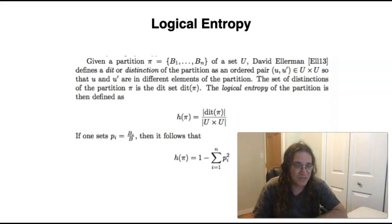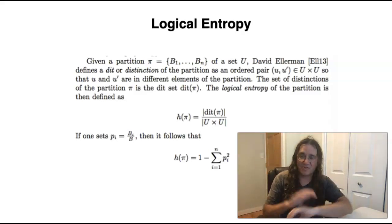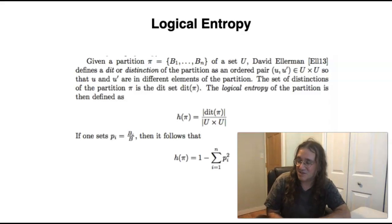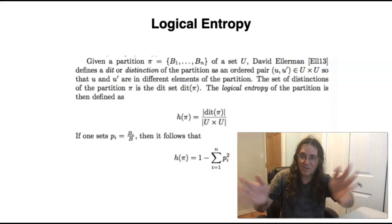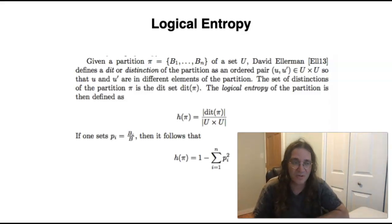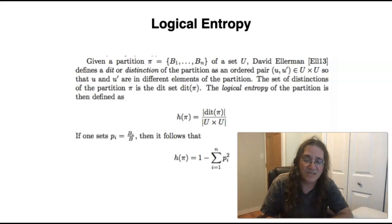One of the ideas I'm going to look at here is logical entropy. Logical entropy is a different way of measuring uncertainty than Shannon entropy. So basically the logical entropy of a partition is the percentage of all pairs of elements that are put into different partition cells within that partition.